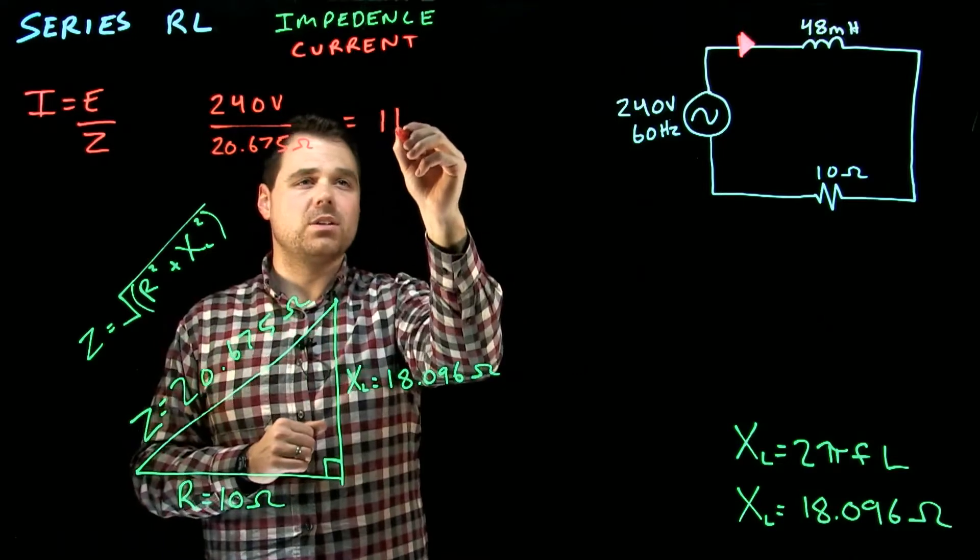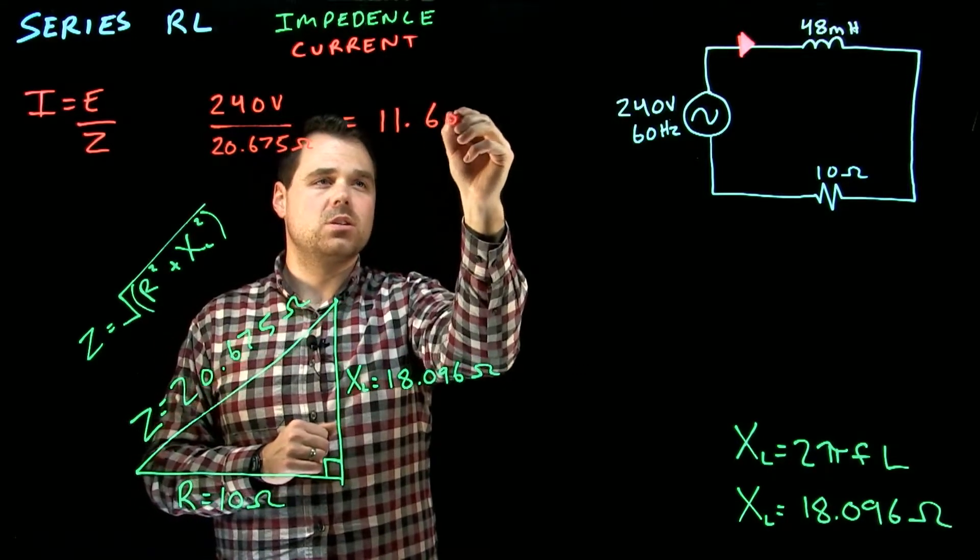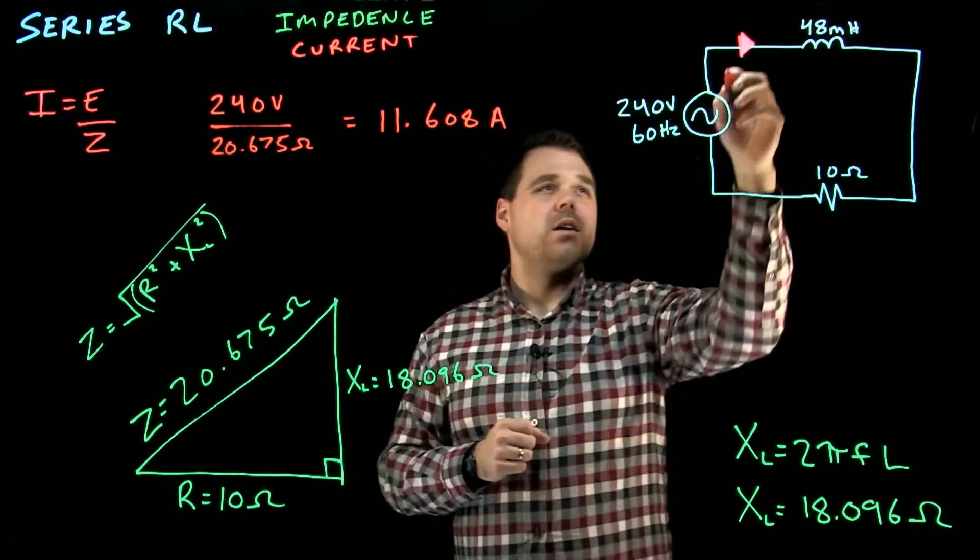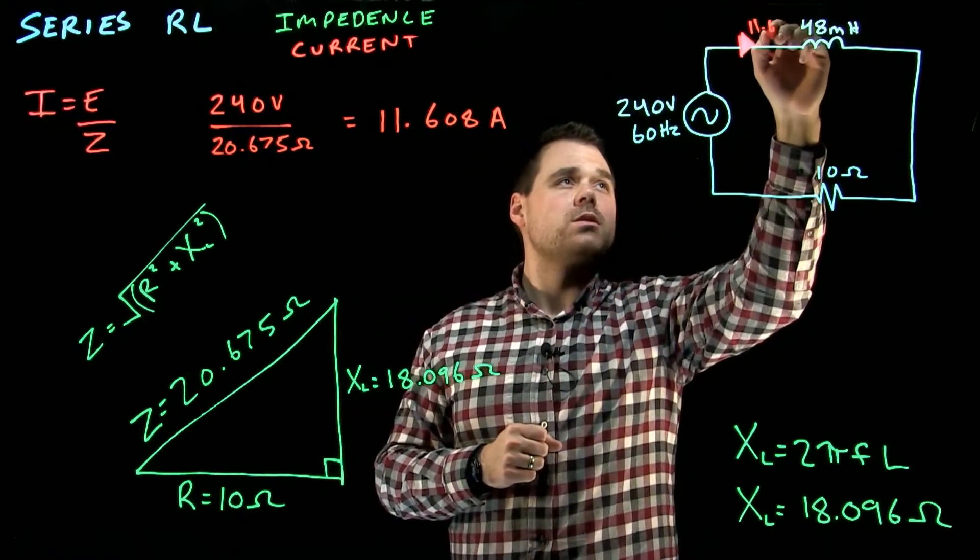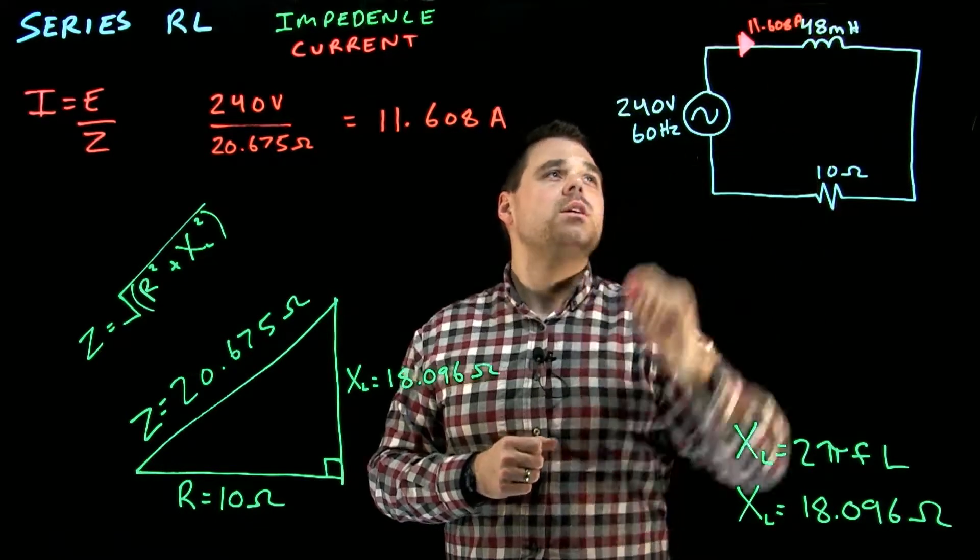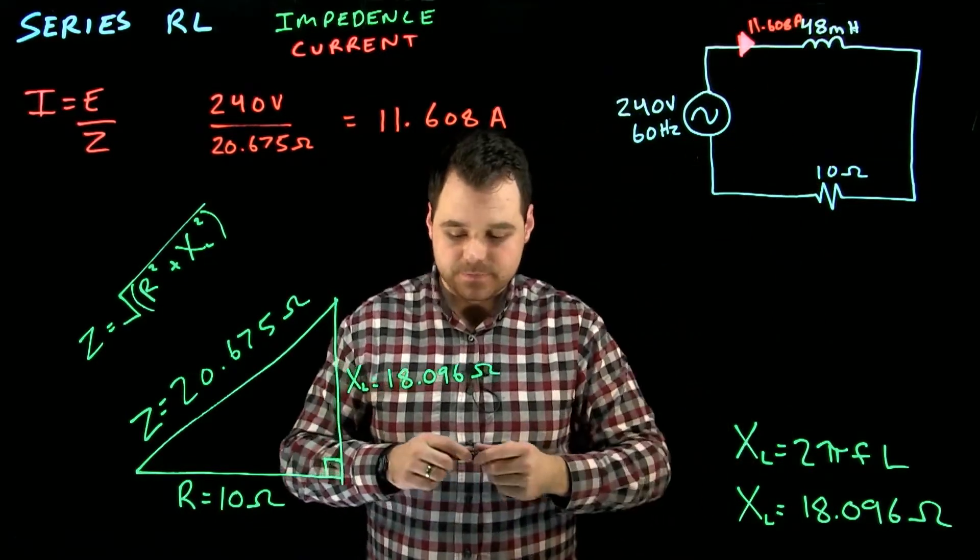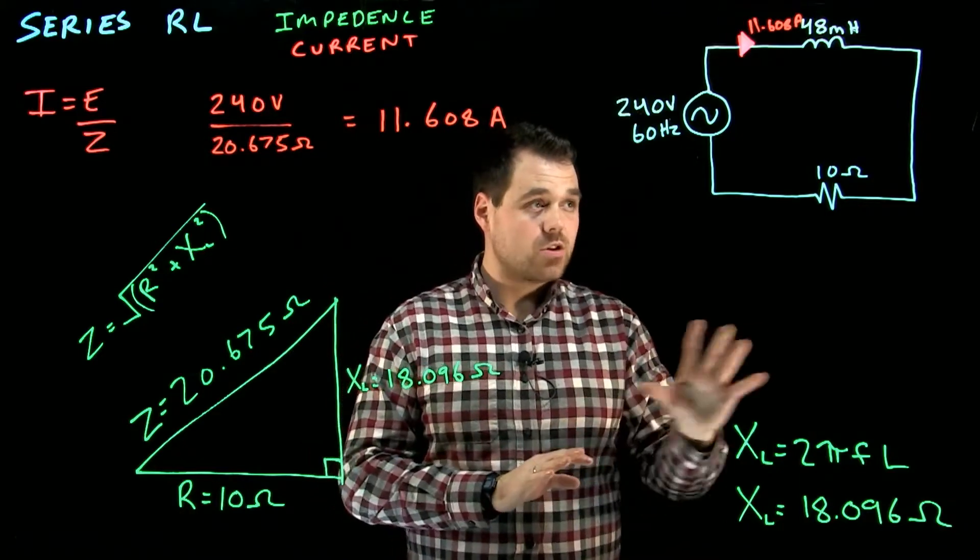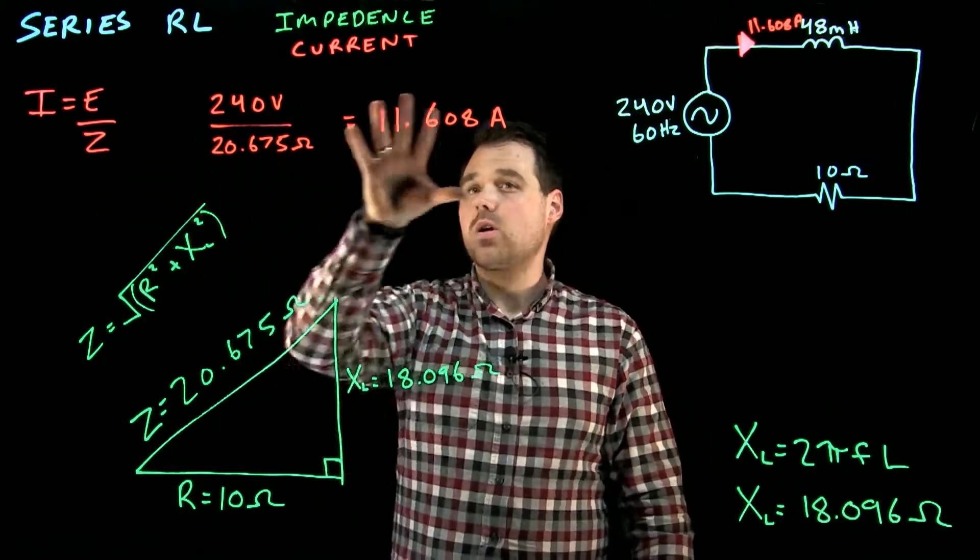Our current is 11.608 amps. Now we know that 11.608 amps is flowing everywhere in the whole circuit.